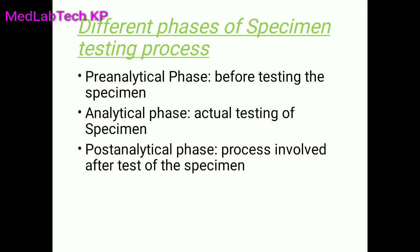Pre-analytical means before testing — the specimen is prepared before analysis. Analytical refers to the actual testing of the specimen. Post-analytical is the process involved after testing the specimen. Generally, the maximum number of errors occur in the pre-analytical phase, at approximately 62%. Post-analytical errors account for 23%, and analytical errors are the least, at 15%.